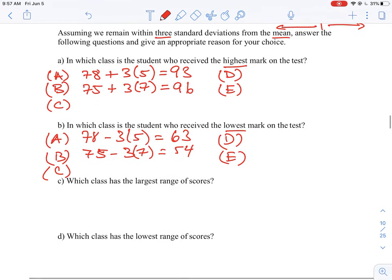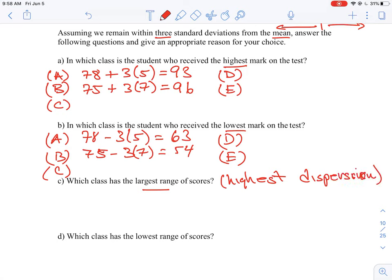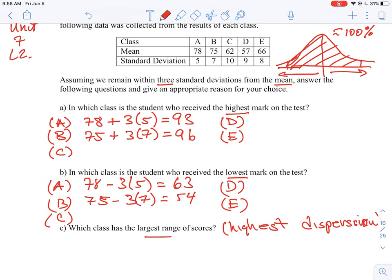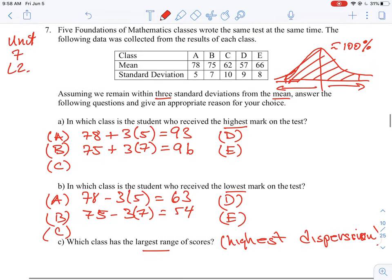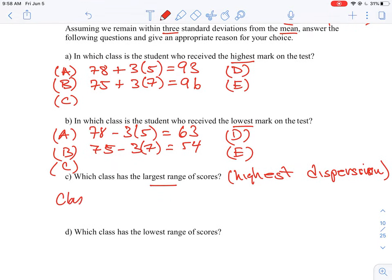And then C and D says which is the largest range of scores. And so the largest range, the largest range of scores is actually a measure of what's called dispersion. So this is the highest dispersion of scores. So how does the data spread out? So the way we need to look at this is that the standard deviation that is the highest is going to have the greatest range or variability in scores. So in this case if we look at this it's going to be class C because the standard deviation of sigma is equal to 10.